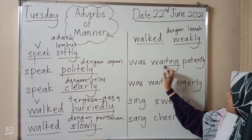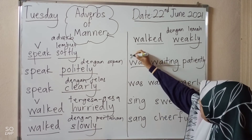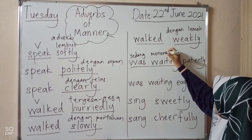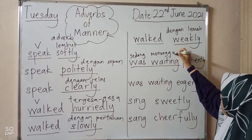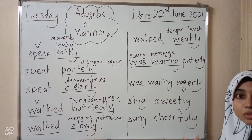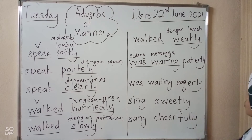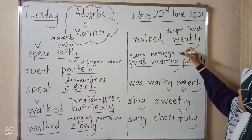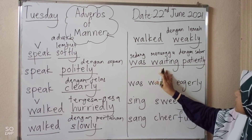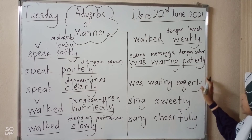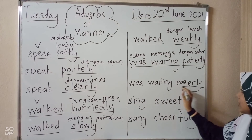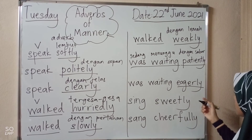Next, the verb is 'waiting' — menunggu. How did the person wait? Bagaimana seorang tu menunggu — adakah dia menunggu dengan sabar? Was waiting patiently — dengan sabar; or was waiting eagerly — dengan tidak sabar-sabar.